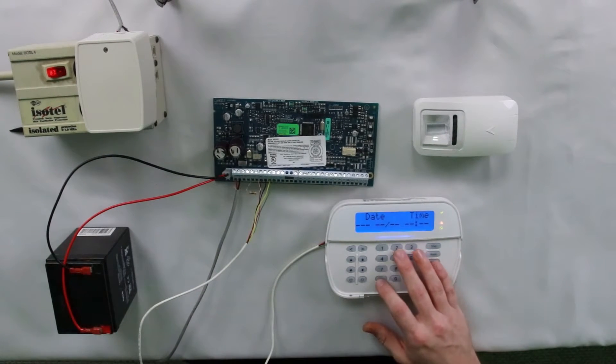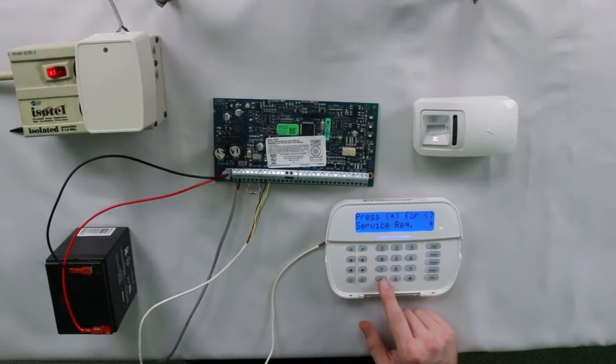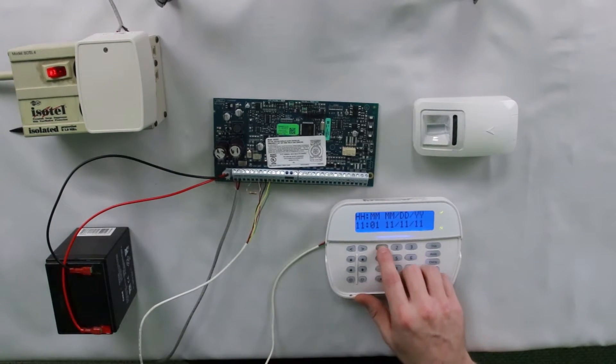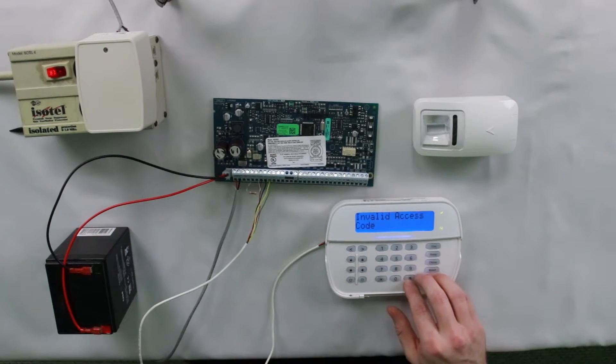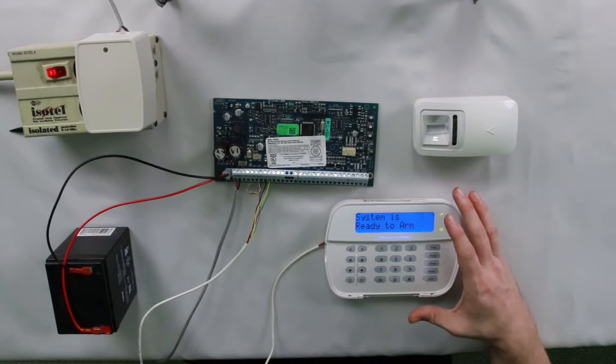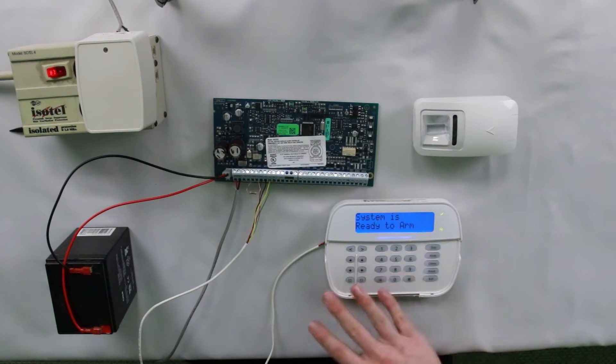But if you don't have Alarm.com, you can hit star 2. If you see the service required, hit star. Then you should see loss of clock with a star next to it. So hit star, enter your master code, and then re-enter the time and date. So now that that is done, I pressed 1 a little bit too much, but once that's done, all the troubles on your system should be clear.